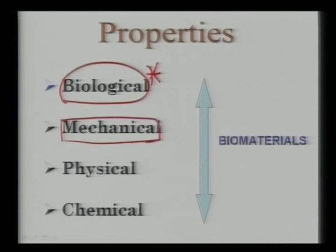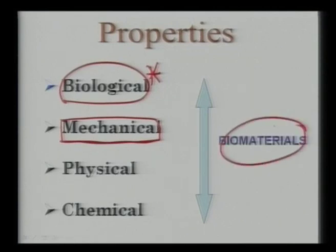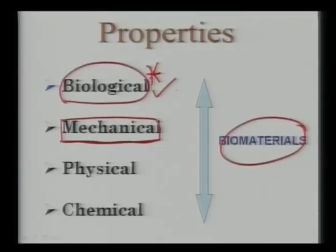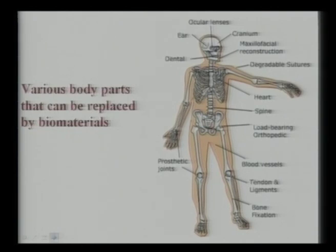Only if the biological properties meet the criteria for use in biological applications — in vitro or in vivo — will the other properties such as mechanical, chemical, or physical properties be of relevance. Therefore, biological properties, as opposed to mechanical properties, need to be evaluated first and given more importance while developing biomaterials.